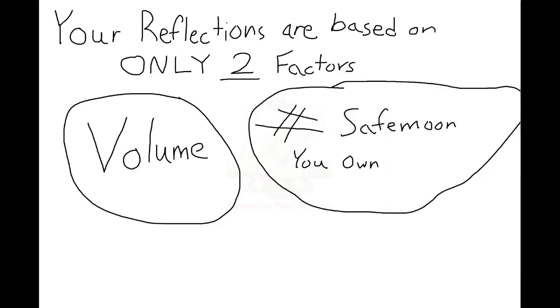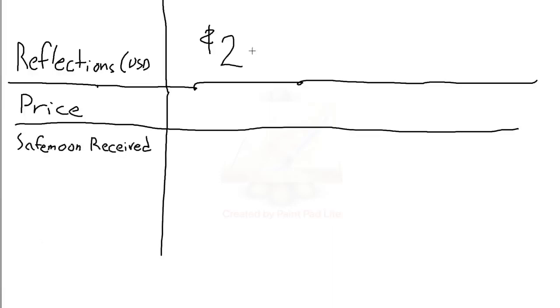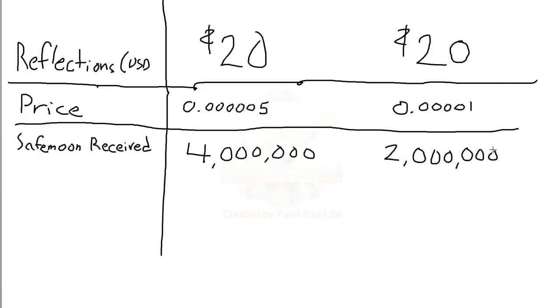As long as you don't sell, your reflections in U.S. dollars will only grow as long as the volume grows or stays constant, because your SafeMoon bag is consistently increasing. What changes is the reflections in SafeMoon tokens themselves, and this is due to the price of SafeMoon at each given moment during any transaction. The value in USD will stay the same or increase, but the arbitrary number of SafeMoon you receive will change depending on price.